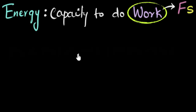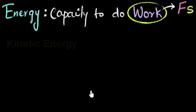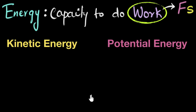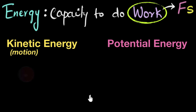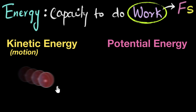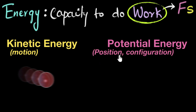Let's quickly summarize what we learned. Anything that can do work must have energy. We mainly saw two kinds of energies: kinetic energy and potential energy. Kinetic energy — the word 'kinetic' stands for motion — is the energy due to moving things. Anything that is moving can do work and must have energy. The faster it moves, the more kinetic energy it has. Potential energy is the energy that's waiting to become kinetic, and it depends on the position or configuration of the object.